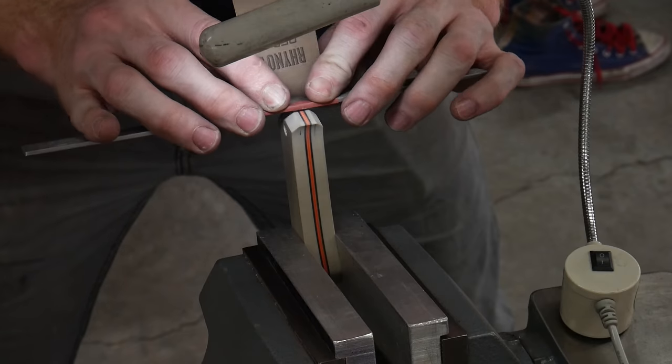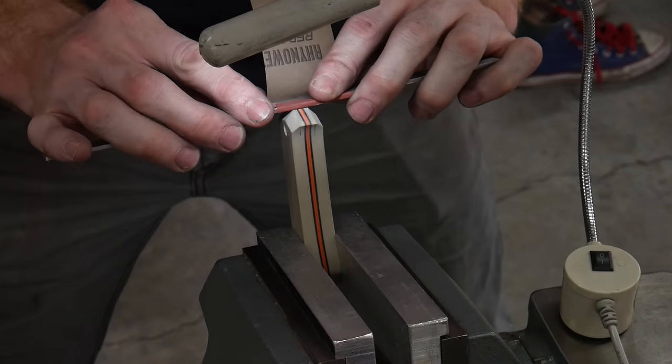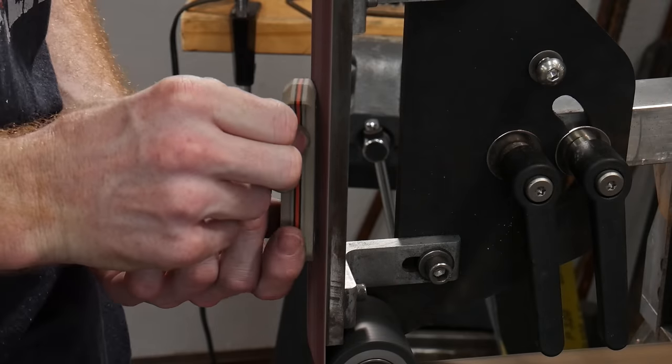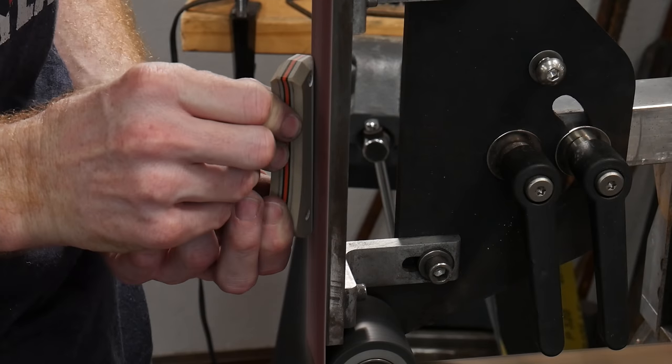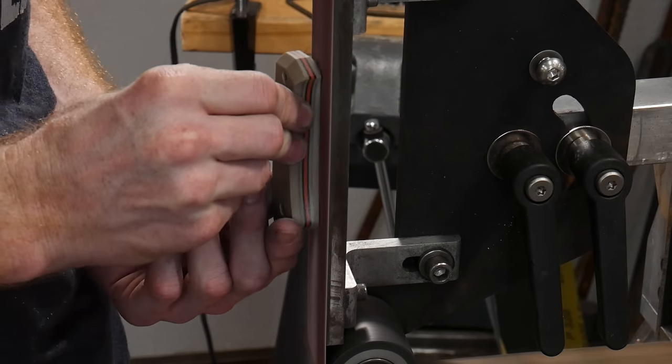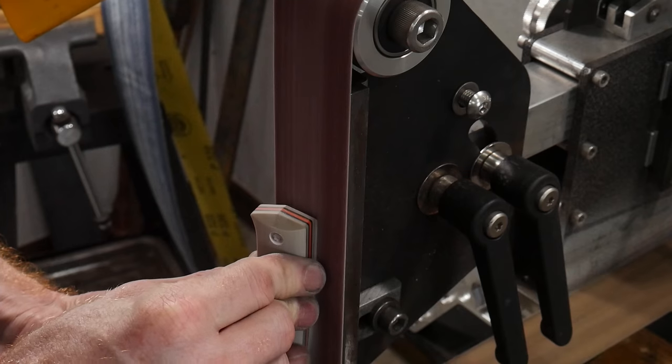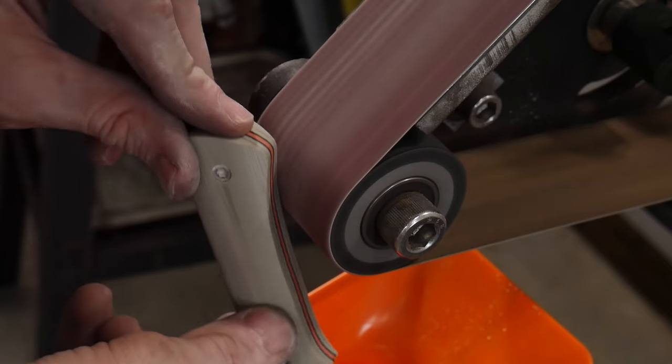Now y'all just saw me grinding the bevels on the front of my handle scales. Normally I'd grind in a larger bevel on the front of the handle scales. However, in this case the fastener location towards the front of the handle would be encroached upon if the bevel was larger.